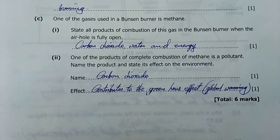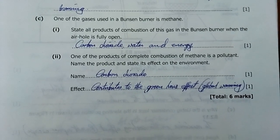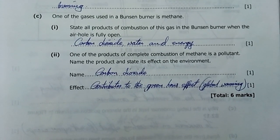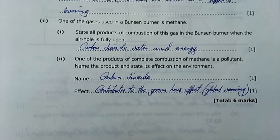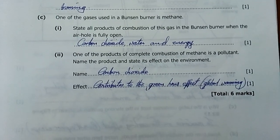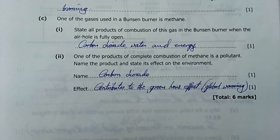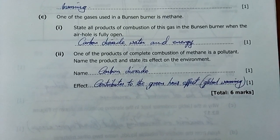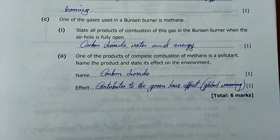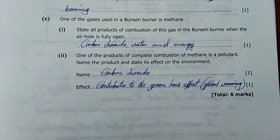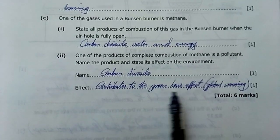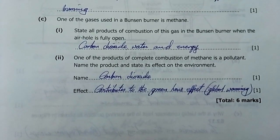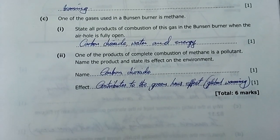One of the products of complete combustion of methane is a pollutant. Name the product and state its effect on the environment. Of course, it's carbon dioxide. Carbon dioxide is a pollutant and it contributes to the greenhouse effect which in turn contributes to global warming. There are three main greenhouse gases which are methane, ammonia, and carbon dioxide.